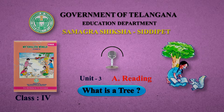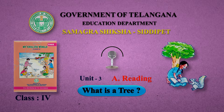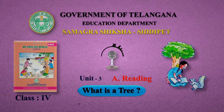Amu and Bittu keep going. Now they meet a traveler. Amu: Tata, what is a tree? Traveler: It is shade. It is like an umbrella for me.